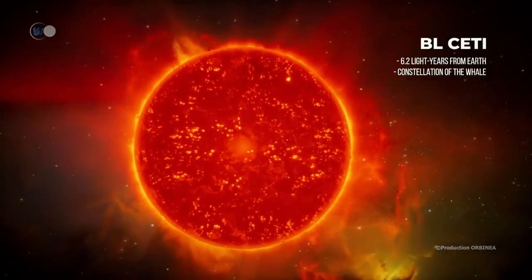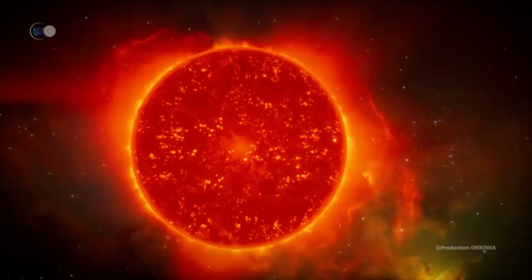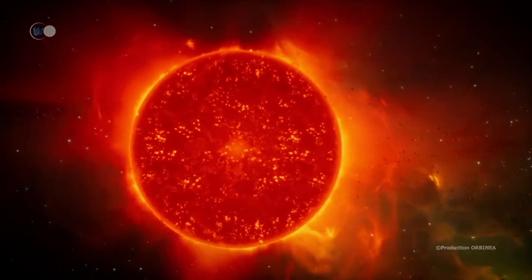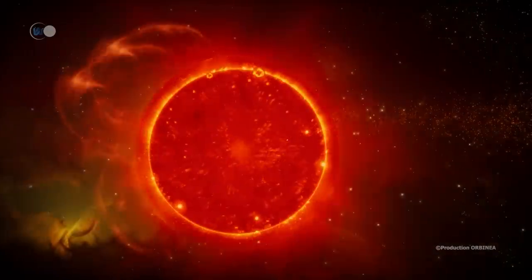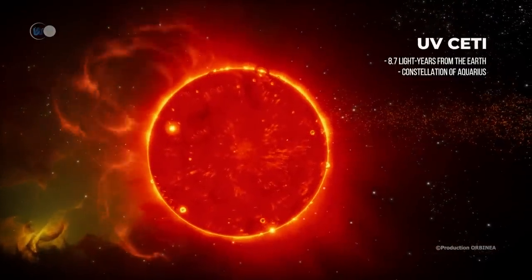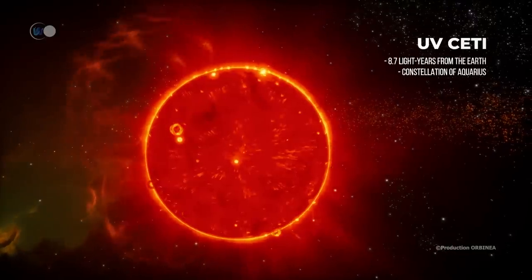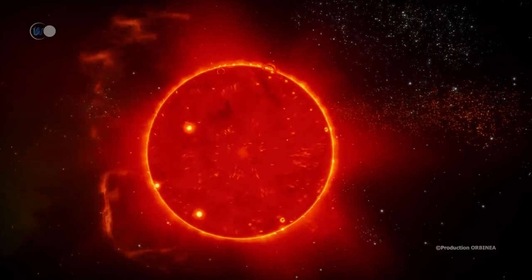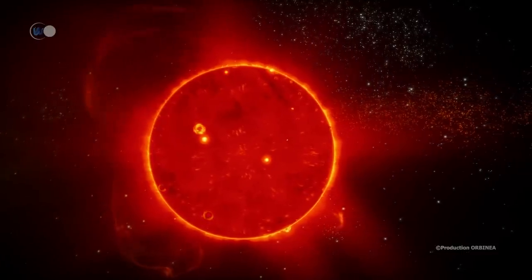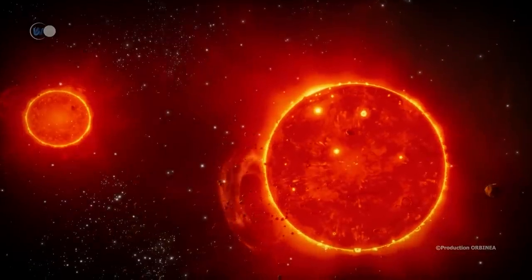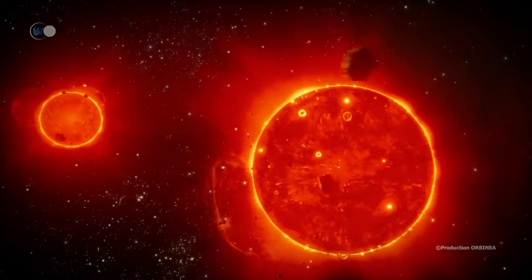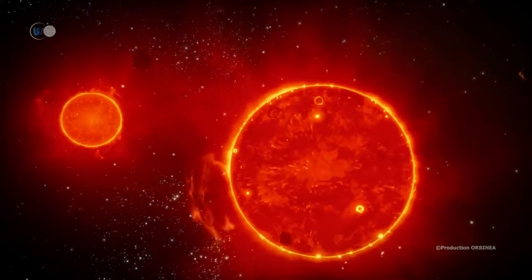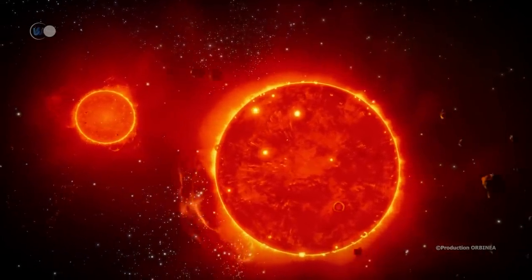These two stars, like twin sisters, have many similarities. Both have almost identical masses, radii and luminosities. Their mass is 10% of the solar mass, their radius 14%, and their combined luminosity is 11,000 times less than that of the Sun. It is therefore not surprising that we detect an identical temperature on the surface of these two stars, which is close to 2,330 degrees Celsius, or 4,220 degrees Fahrenheit.